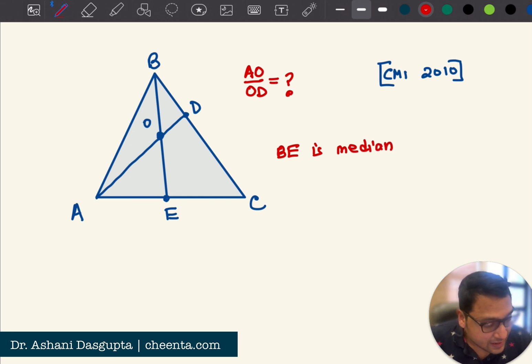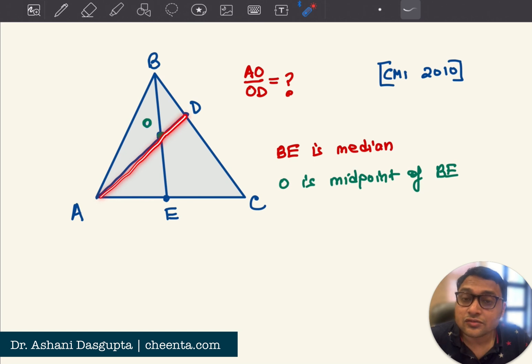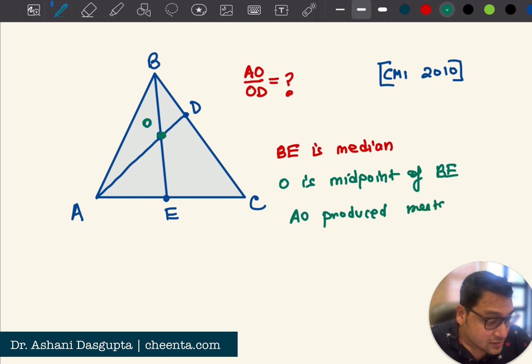We also have O, which is the midpoint of BE. So, O is midpoint of BE, join AO and produce it to meet BC at D. So this is the final point. So, AO produced meets BC at D.